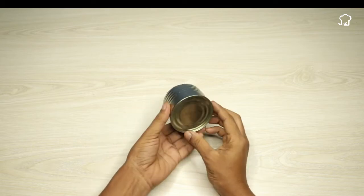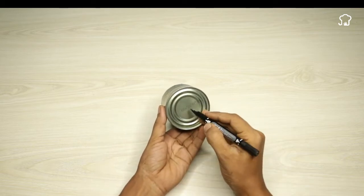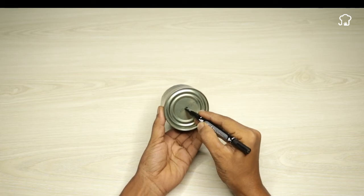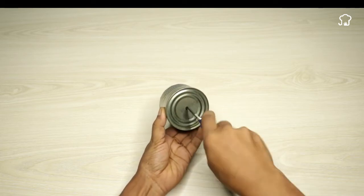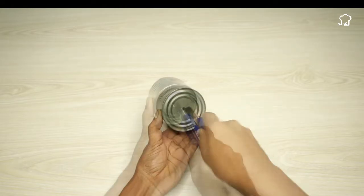Once the can is cut, we will select a specific point on the surface and mark the location where we will make a hole. This hole is crucial, as it will be the point where we will insert the feeder.